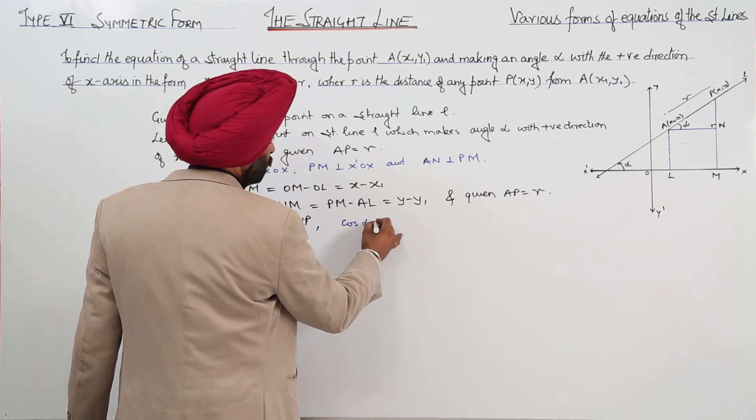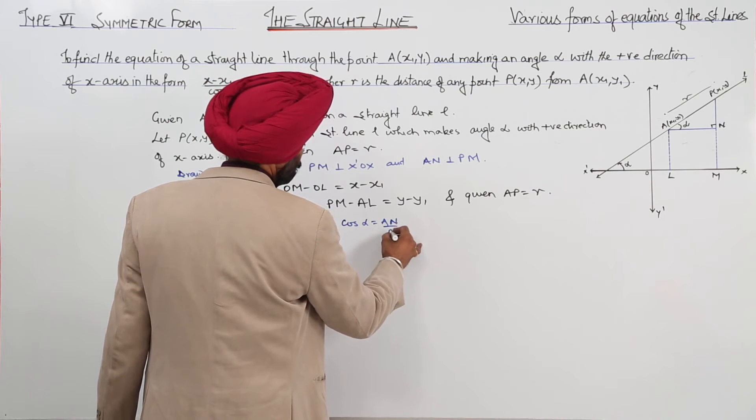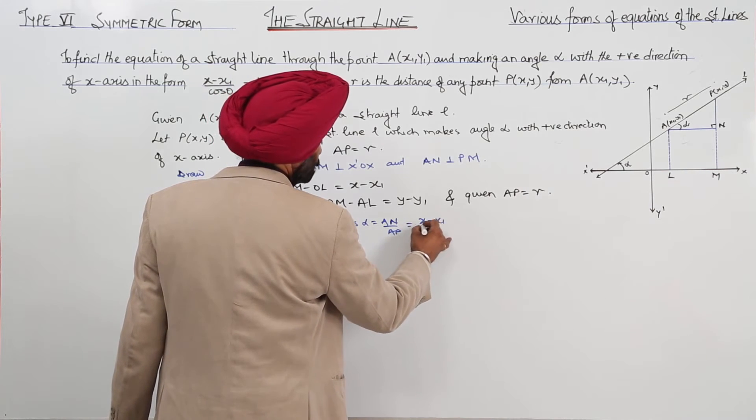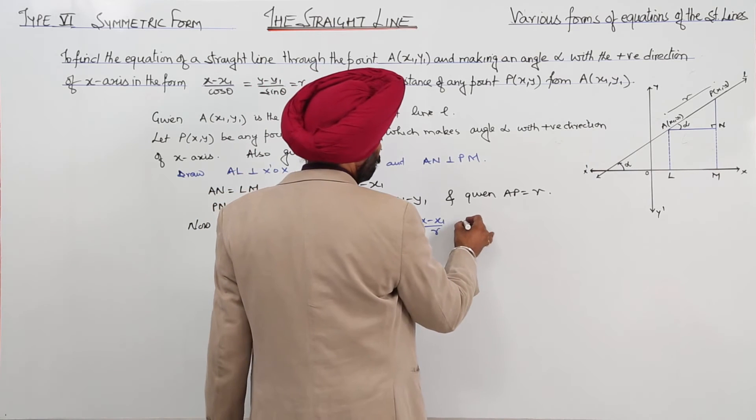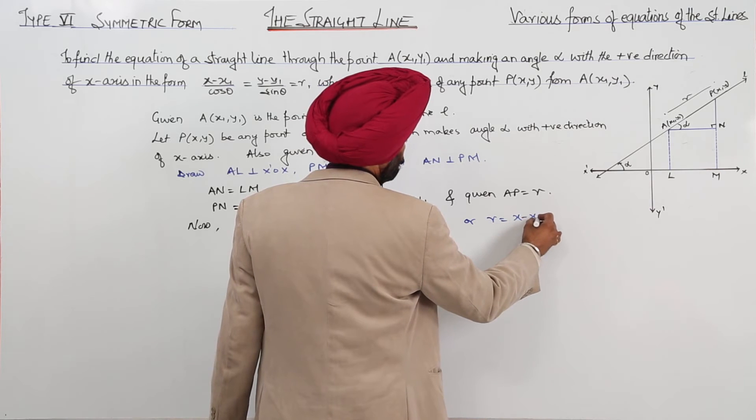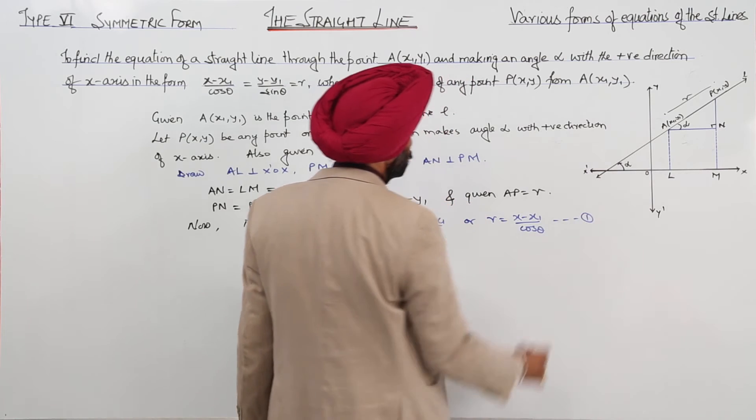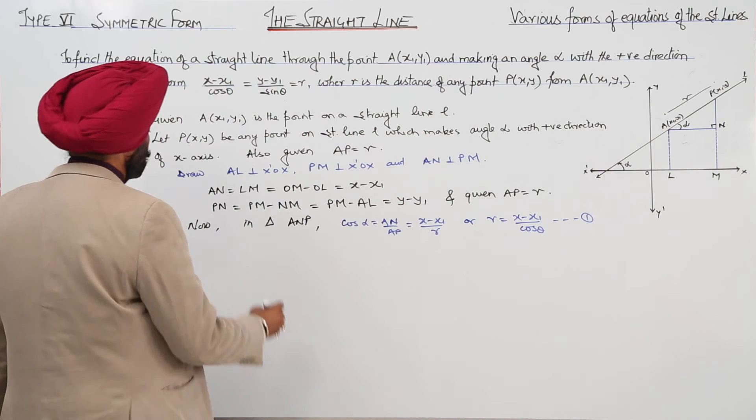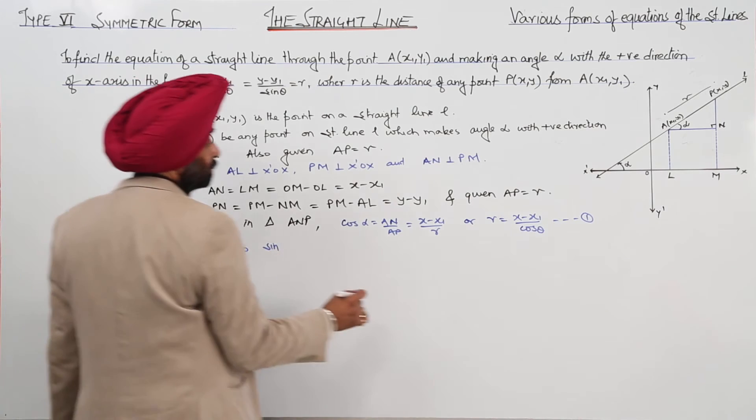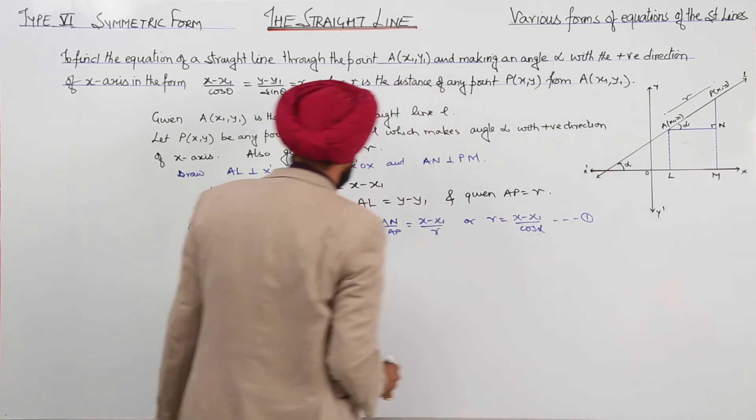Now, cos alpha is AN upon AP, and this is equal to x minus x1 upon r, or we can write it r is equal to x minus x1 upon cos alpha. This is equation 1. Sorry, here it is alpha.